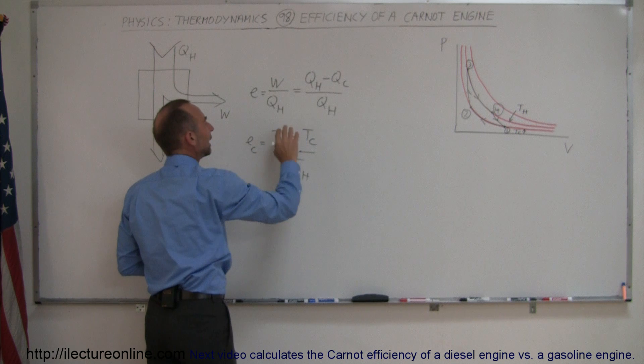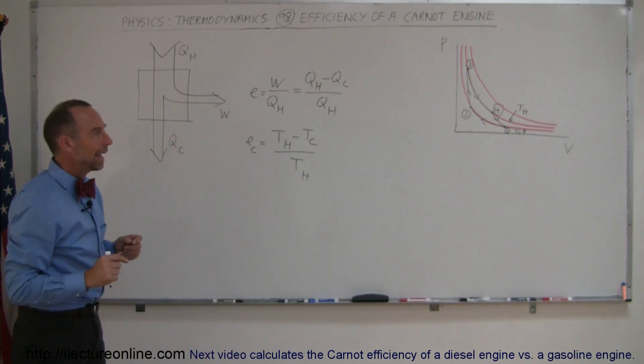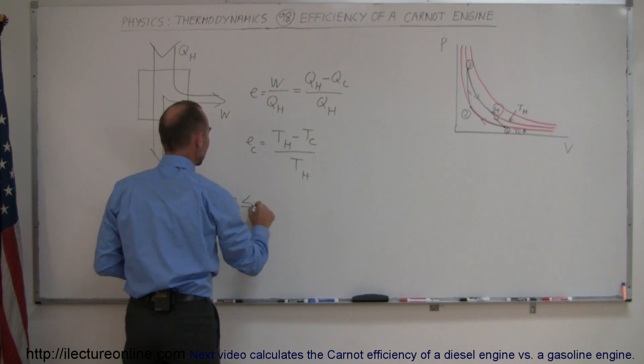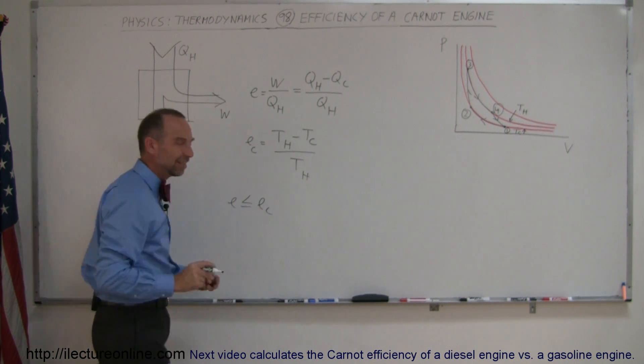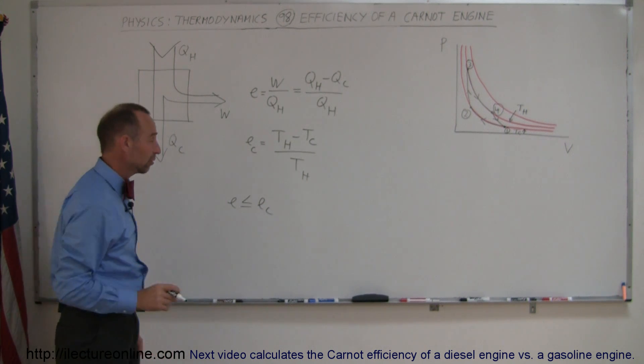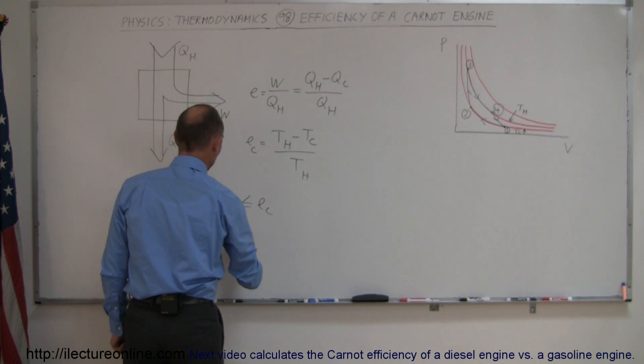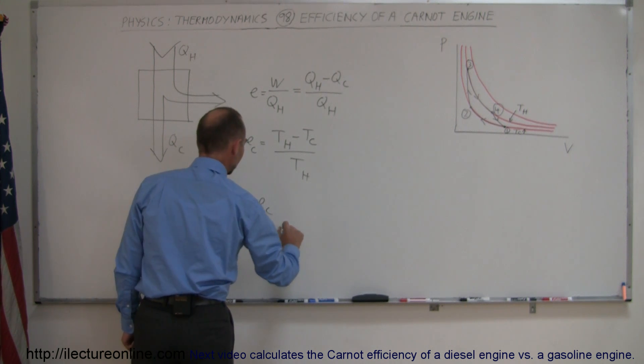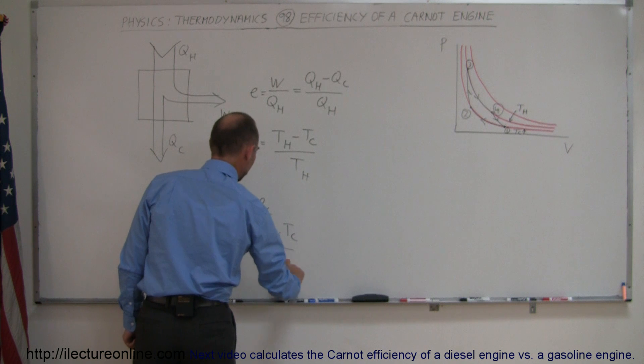Here we use Q, here we use temperature. In all circumstances, the efficiency is always less than or equal to the Carnot efficiency. There's no way an engine can ever have greater efficiency than the Carnot efficiency. The efficiency of any engine is always less than or equal to T_hot minus T_cold divided by T_hot.